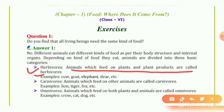Second, Carnivores. Animals which feed on other animals are called Carnivores. Carnivores का meaning है कि जो भी animal है वो दूसरे animals को खाता है। Examples of Carnivores: Lion, Tiger, Fox.